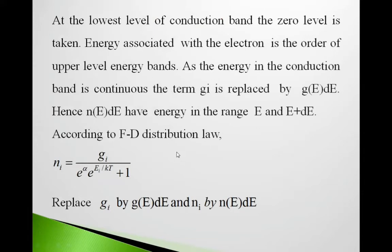Energy associated with electrons is the order of upper level energy bands. As the energy in the conduction band is continuous, the term Gi is replaced by G(E)dE. Hence, n(E)dE have energy in the range capital E and capital E plus dE. According to Fermi-Dirac distribution law, Ni = Gi/(e^(α+E/kT)+1). Replace in this expression, Gi by G(E)dE and Ni by n(E)dE.